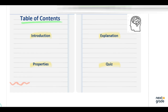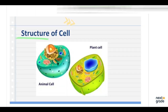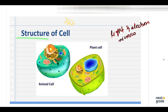The structure of a generalized cell can be studied under a light microscope as well as under an electron microscope. Modern technology has enabled us to isolate various components of the cell, including its organelles, by the process of cell fractionation, and then study their structure and function in detail.